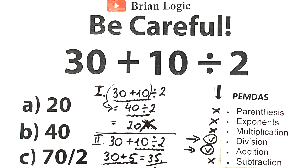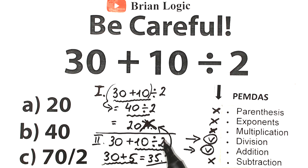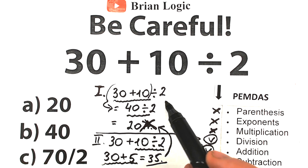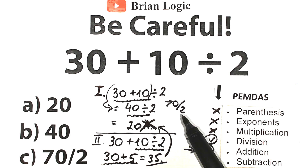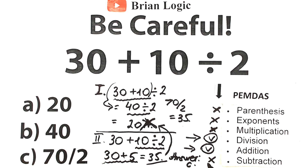The correct answer is 35. Looking at our options: 20 — not correct; 40 — not correct; and option C is 70 over 2. Some students are confused by option C and go back to answer 20 because they don't see 35 explicitly. But if you look closely, 70 over 2 is a fraction, so 70 divided by 2 equals 35. This is the same value, so option C is the correct answer.